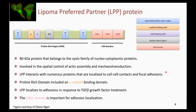Lipoma Preferred Partner (LPP) is an 80 kilodalton protein belonging to the zyxin family. It's involved in spatial control of actin assembly and mechanical transduction, and interacts with proteins at both cell-cell contacts and focal adhesions. It has a proline-rich region with an alpha-actinin binding domain, localizes to adhesions in response to TGF-β growth factor treatment, and this localization is dependent on one of the LIM domains — LIM1.